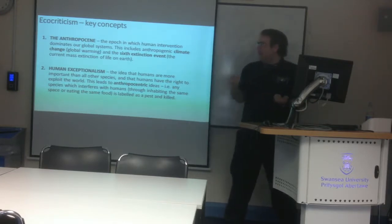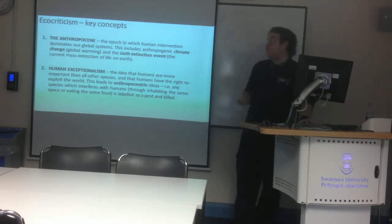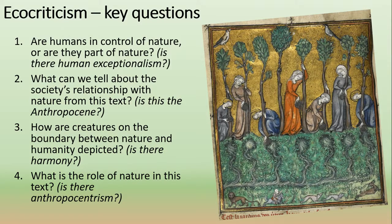So how do we apply these ideas to our texts? One of the easiest ways is to think of it as a series of questions. The eco-critical lens is really interested in whether humans are in control of nature or whether they're part of nature. Are the humans in harmony with nature?